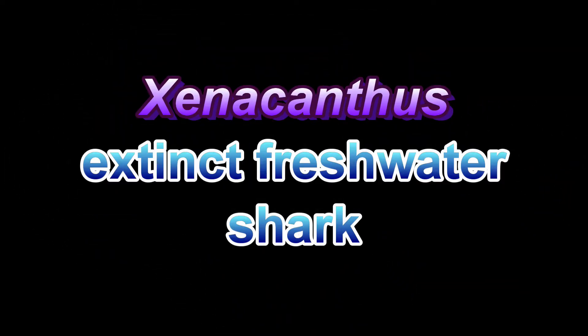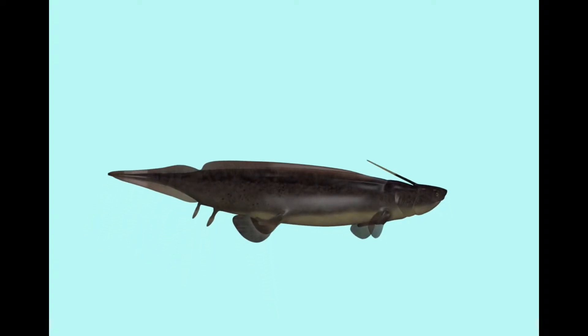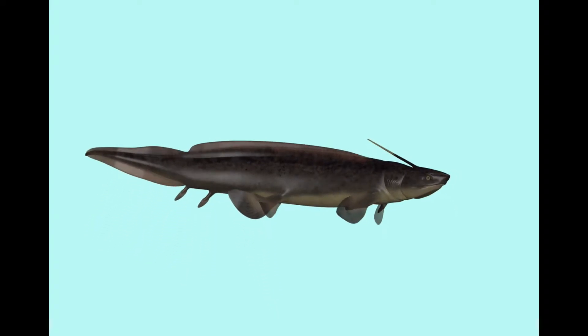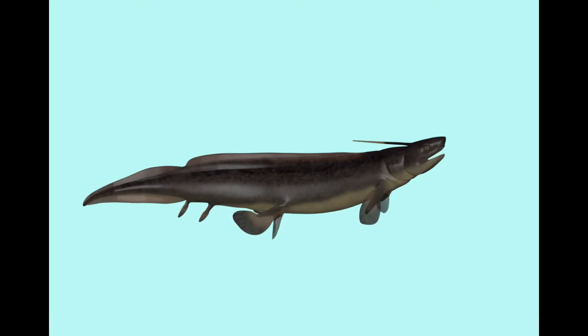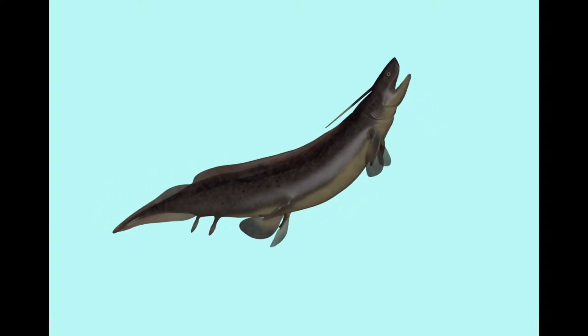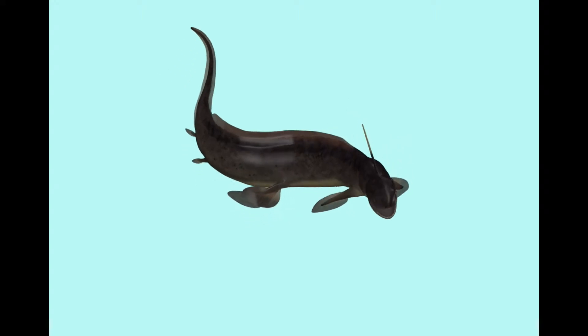Xenocanthus is a genus of extinct shark with more than 20 species described that originated in the late Devonian period and last appeared in the end Triassic.